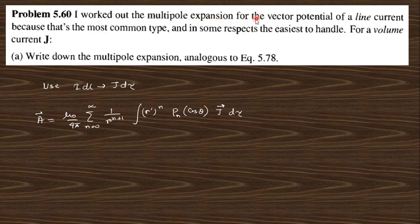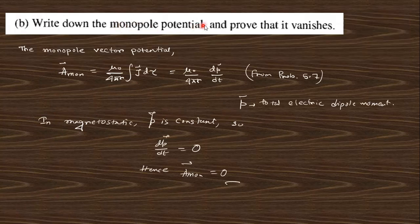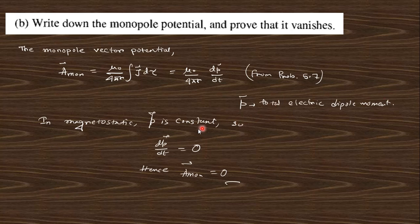Problem 5.59: I worked out the multipole expansion of the vector potential for a line current. For a volume current, write down the multipole expansion analogous to equation 5.78 using the substitution I dl = J dτ. The vector potential in multipole form is written here. For the monopole term, it is identical to the electrostatic case, and using the result from problem 5.7, since the total charge is constant dp/dt = 0, so the monopole vector potential A vanishes.